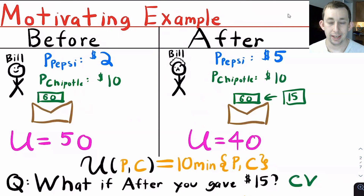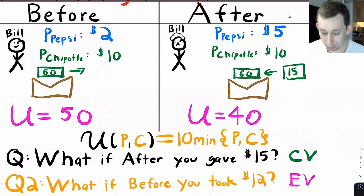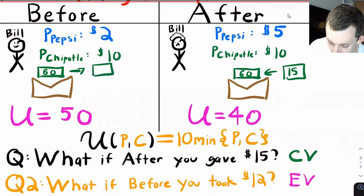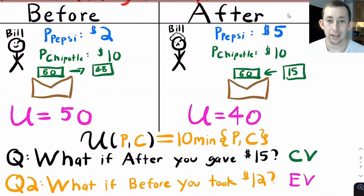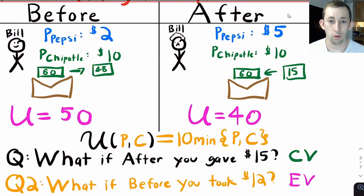We would say the impact to Bill's welfare of this price change is $15, measured using compensating variation. For equivalent variation, what if you took away $12? Then his $60 would become $48. Bill could only afford four bundles and would be at the same utility as after the price change. So the equivalent variation is $12 — Bill would be willing to pay up to $12 to avoid this price increase.